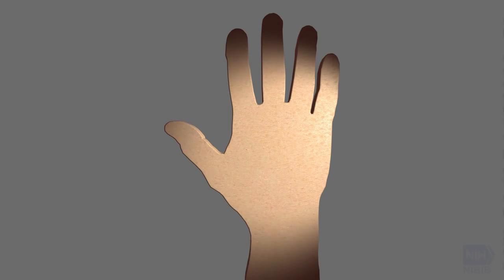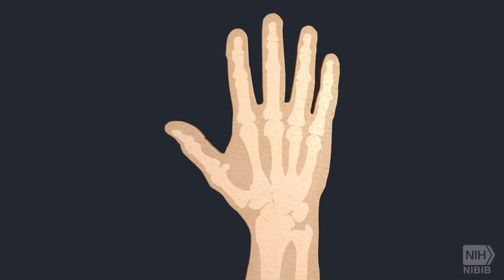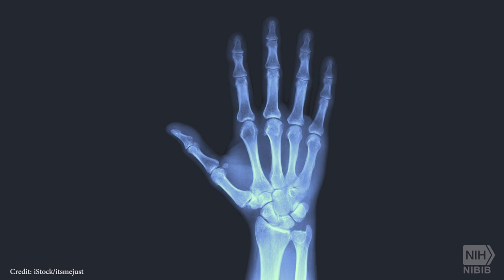If you place your hand in front of a flashlight, it will cast a shadow on the wall behind it. In a similar manner, x-rays directed at the body produce shadows on the opposite side that can be registered on film or on a digital sensor.